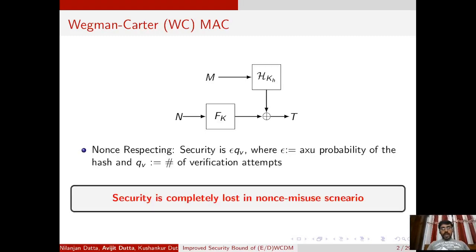To generate the random string, we apply a pseudorandom function on a distinct nonce n. This MAC gives the optimal security bound. In particular, when all the nonces are distinct across different queries, it achieves epsilon times qv security bound, where epsilon is the almost non-universal probability of the underlying keyed hash function and qv is the number of verification attempts an adversary can make. However, an inherent drawback is that if the nonce is reused even once, then the construction does not give any security — security is completely lost in the nonce-misuse scenario.